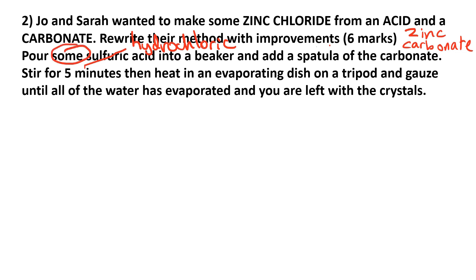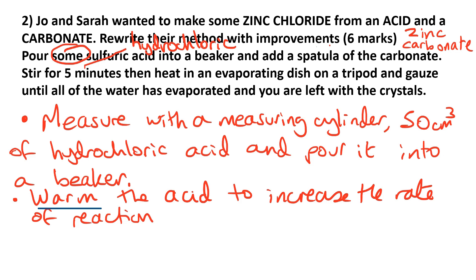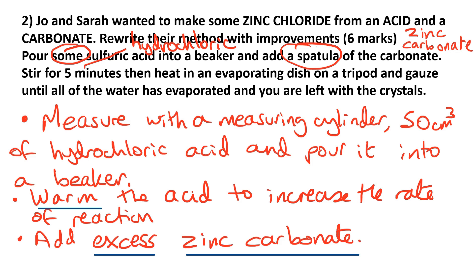Rather than just writing 'some sulfuric acid' we're going to be specific about the volume. So we're going to say: measure with a measuring cylinder 50 cm³ of hydrochloric acid and pour it into a beaker — it doesn't have to be 50, just a sensible amount like 25 cm³ or 30 cm³. Then we're going to warm the acid to increase the rate of reaction so that it reacts a bit quicker. And then instead of just adding a spatula of the carbonate, we're going to add excess zinc carbonate to make sure that all of the acid has reacted.